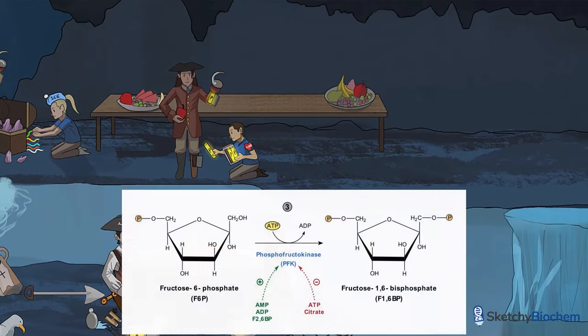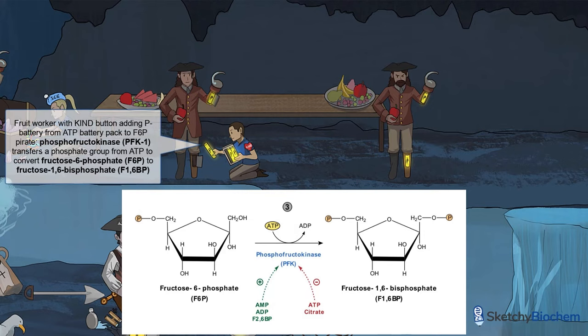In step 3, phosphofructokinase 1, or PFK1, kindly transfers a phosphate group from ATP onto F6P to make fructose-1,6-bisphosphate, aka F1,6-BP. PFK1 is represented by another kind button-wearing cast member adding a phosphate battery to the one peg leg of the six hook-handed pirate.